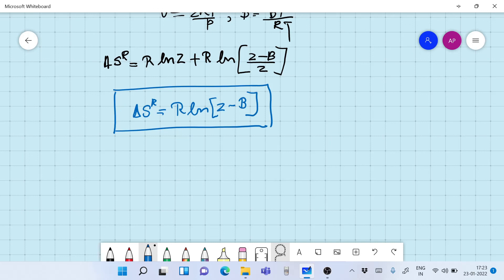Let's check for an ideal gas. So for an ideal gas we know that B is equal to 0 and Z is equal to 1. And if we put these values B is equal to 0 and Z is equal to 1 in the above equation we get S^R is equal to 0 which is a fact for an ideal gas.